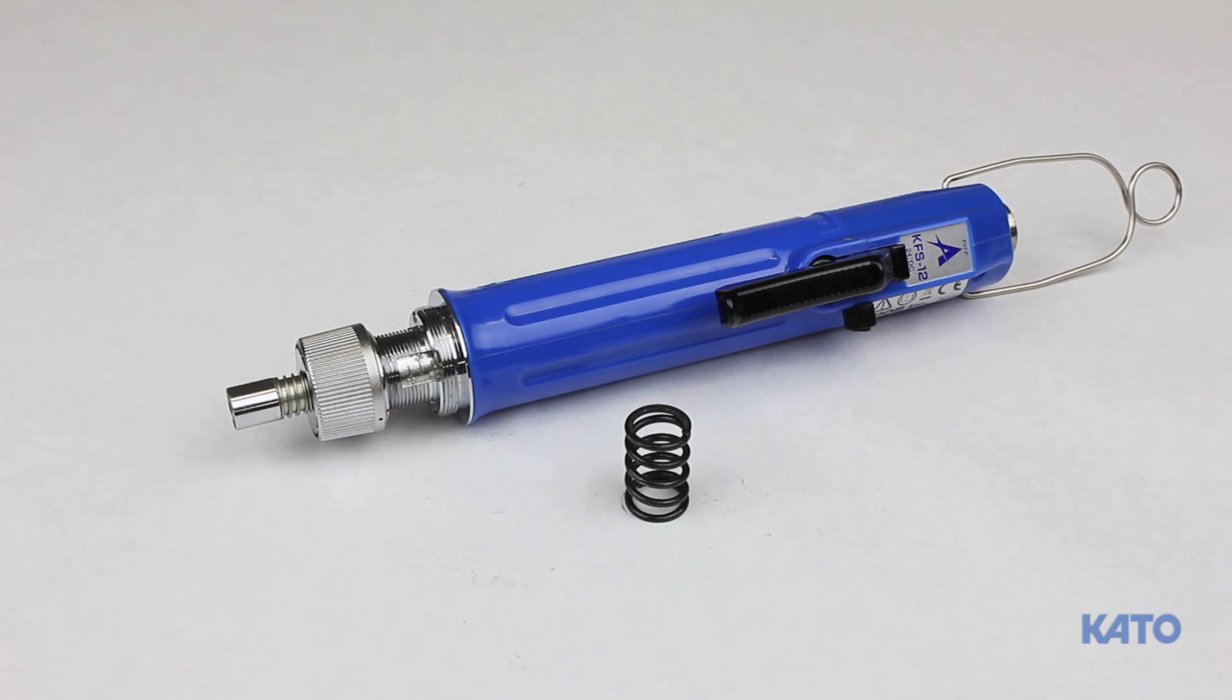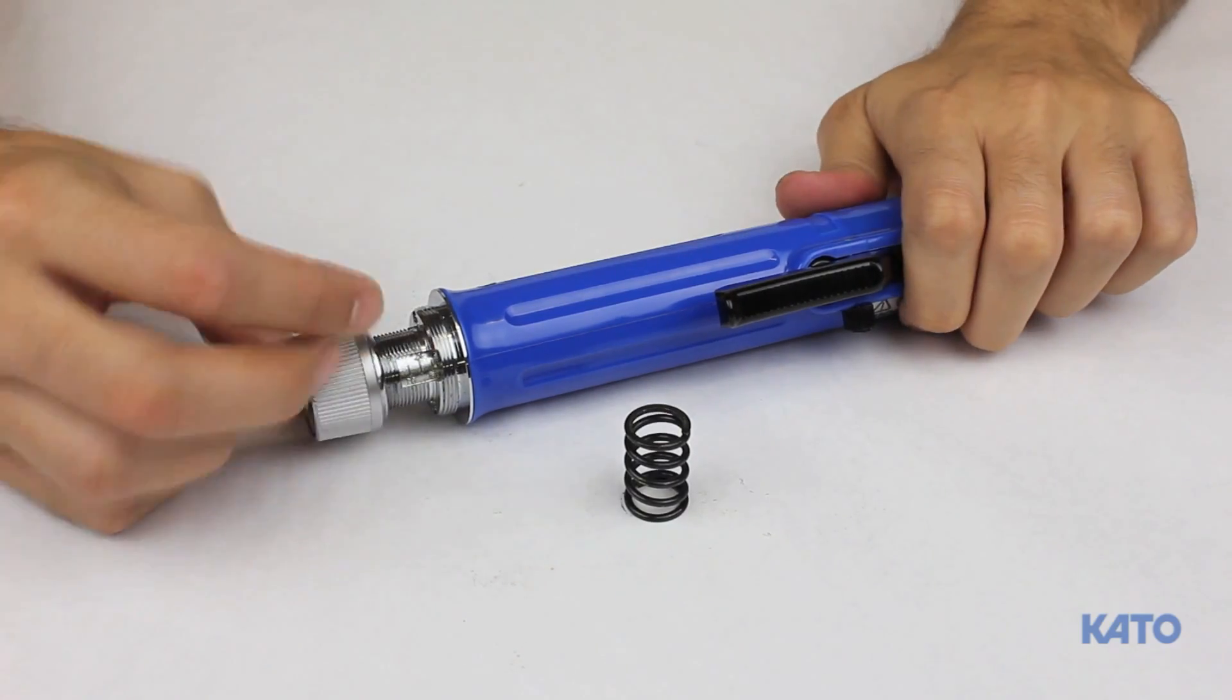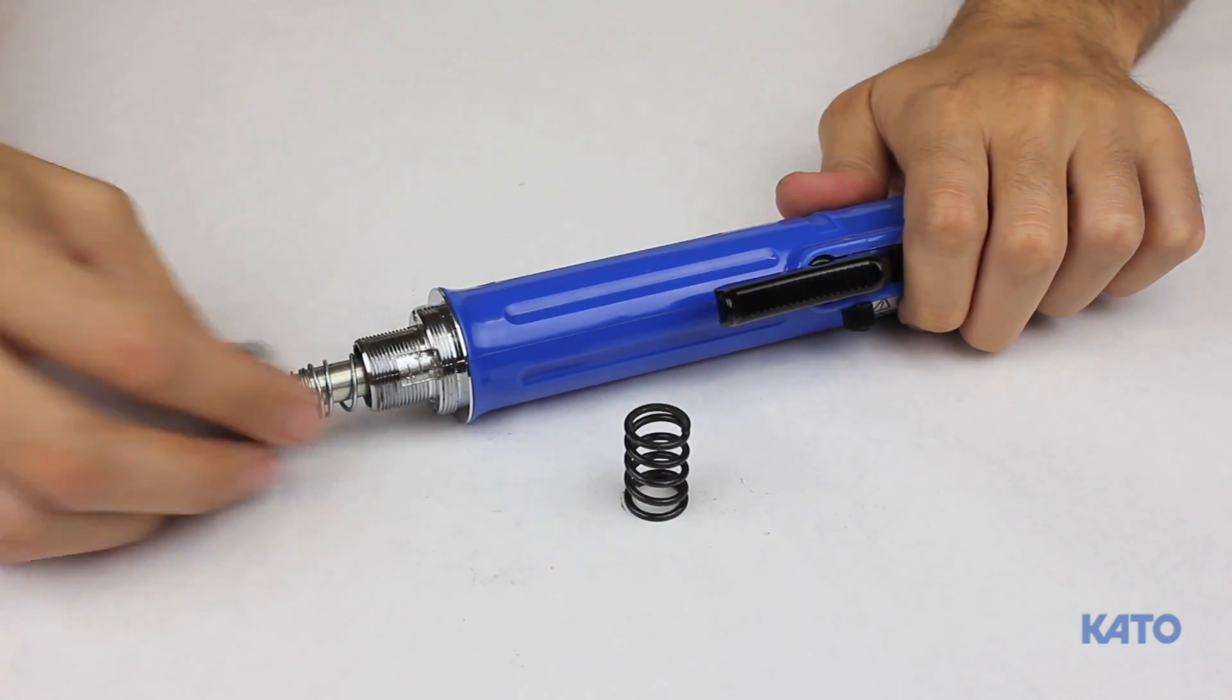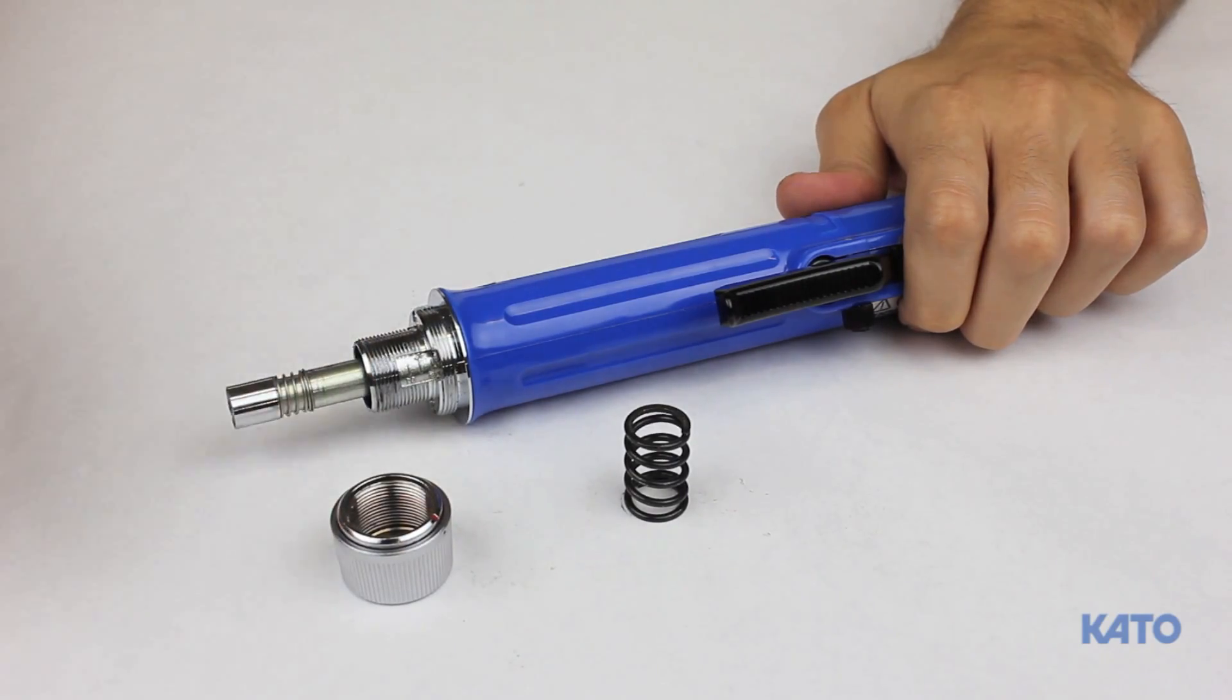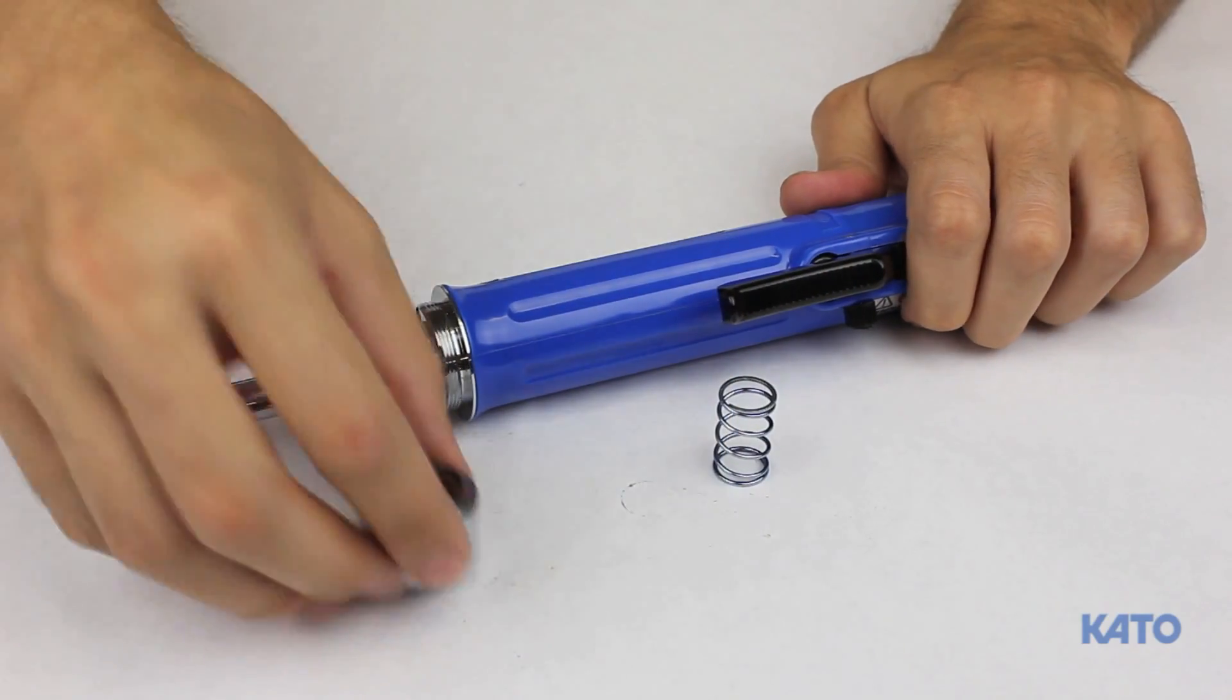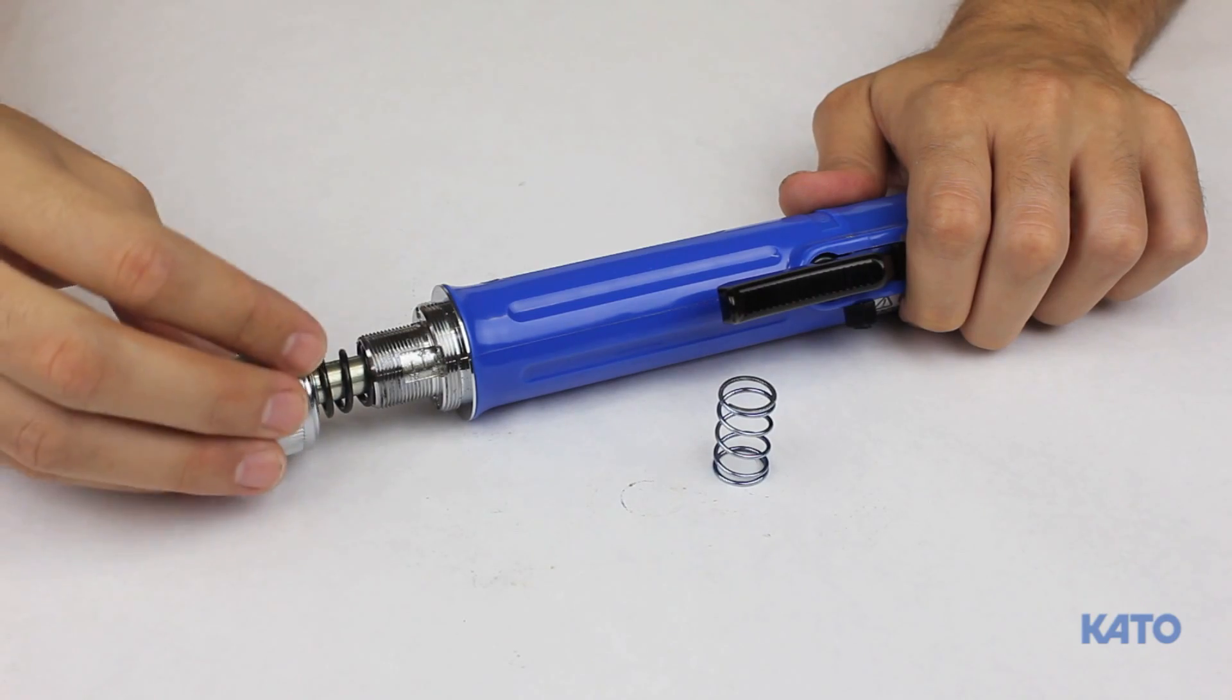To install the appropriate spring, remove the torque adjusting nut by turning it counterclockwise. Slide the appropriate spring over the quick disconnect sleeve, and reconnect the torque adjusting nut.